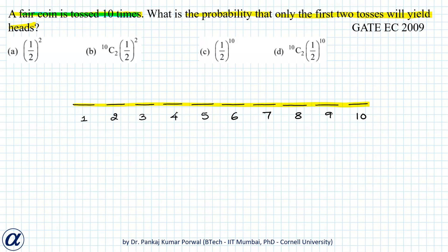That's why there is a term 10c2 in the binomial probability because that is the number of ways in which we can select two places out of 10 places. But because here we are given that the two heads occur in the first two tosses.